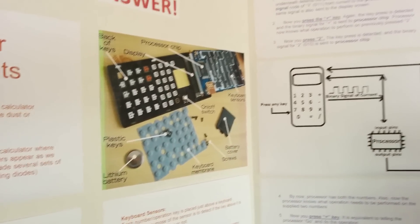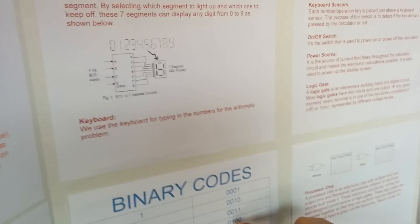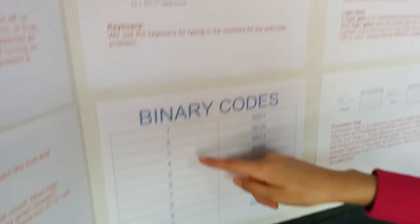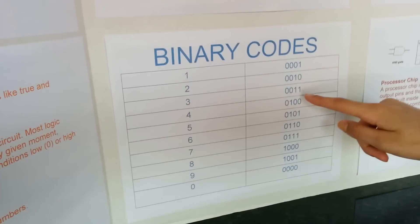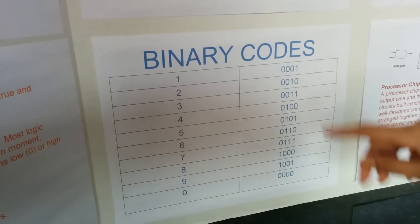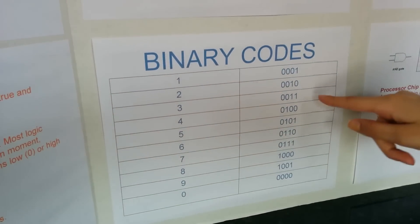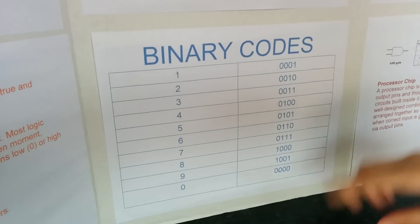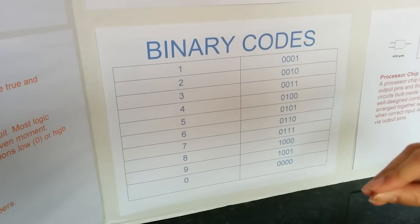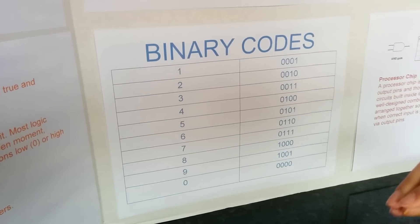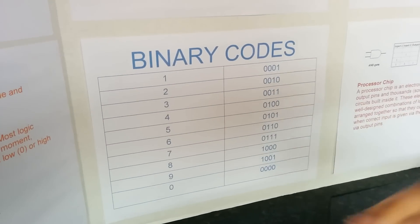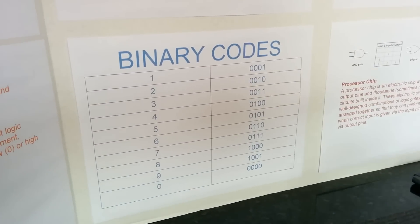So for example, if the current wants to show three, that's 0011 — it'll do no current, no current, flowing current, flowing current.